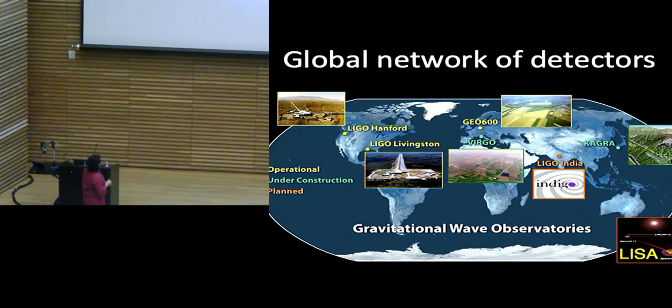LIGO is not the only game in town. There's two U.S. interferometers. And then there's a three-kilometer detector that's operational in Europe and in Italy. It's a French-Italian collaboration. There's a three-kilometer detector under construction in Japan and a planned detector in India and also a planned space observatory.